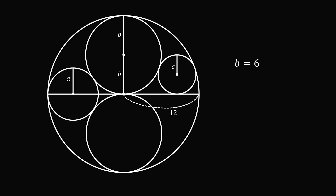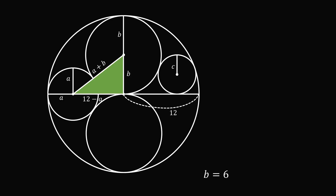Now, let's calculate the value of a. Construct the following right triangle, where one leg is equal to b. The hypotenuse is equal to the sum of the radii, so its length will be a plus b. The other leg: we know this length is equal to a, and a radius of the large circle is equal to 12, so the other leg will have length equal to 12 minus a.